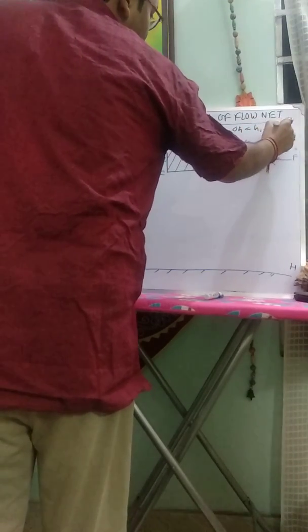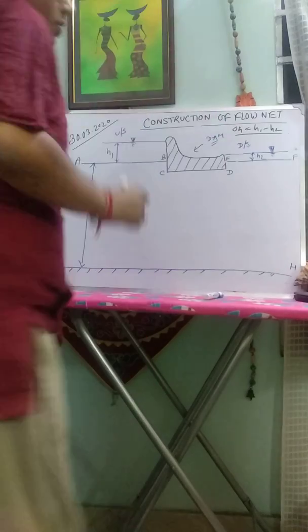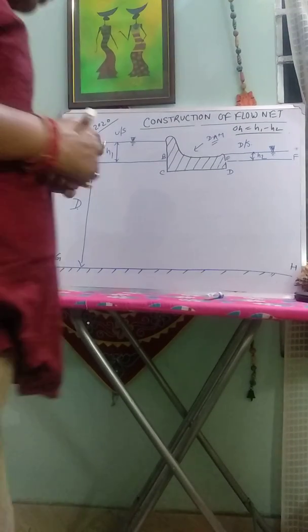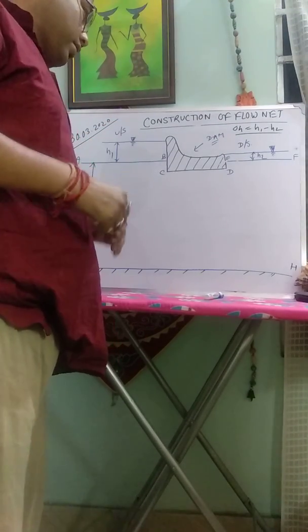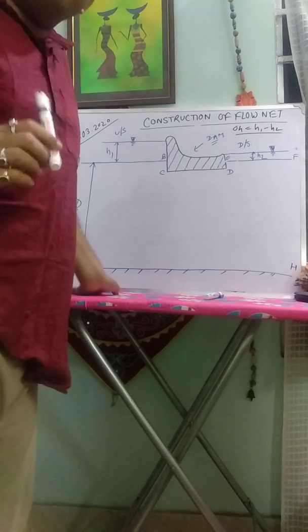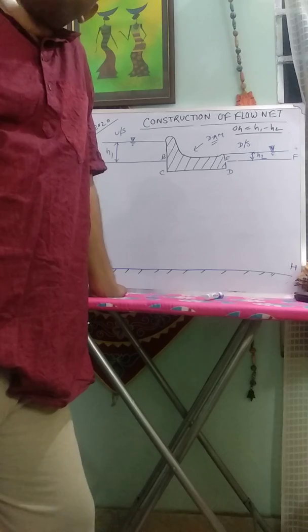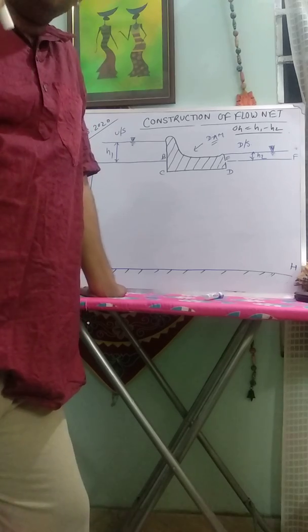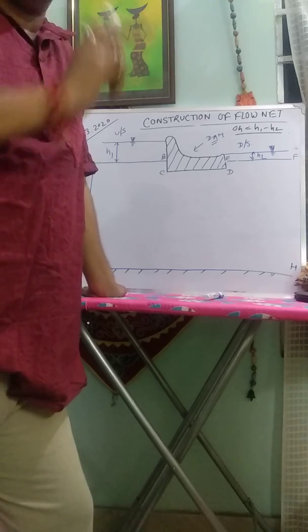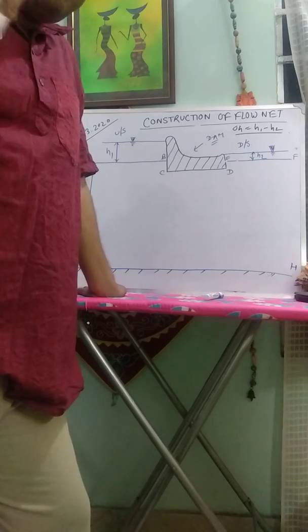The head difference of water is del h equals to h1 minus h2. Now, keep in your mind - when we construct flow net, we have to keep the flow net properties in mind.